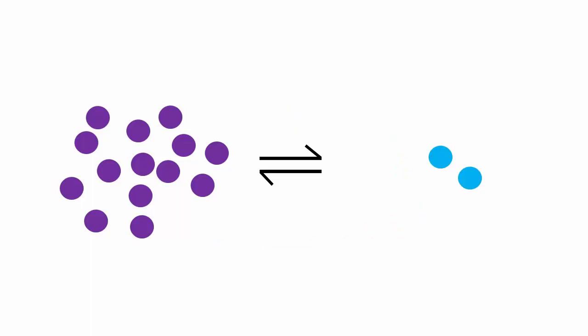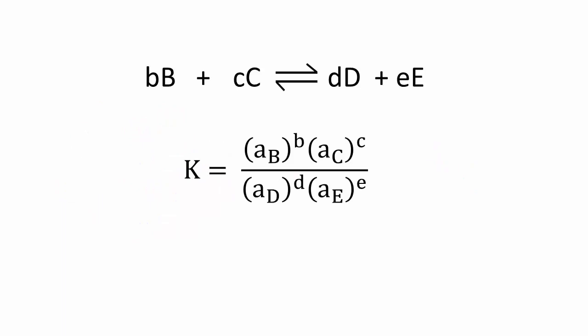For any reaction at a given temperature, an equilibrium constant exists. The constant is expressed as products over reactants, with each species activity raised to the power equivalent to the number of its molecules in the balanced chemical equation.